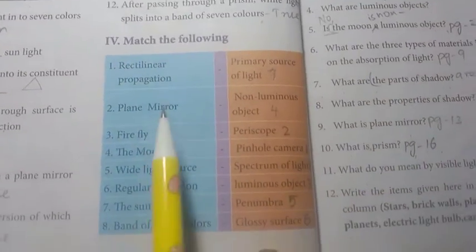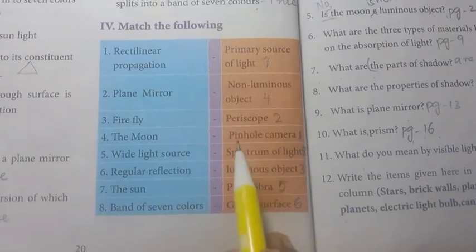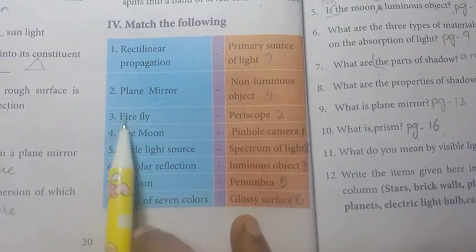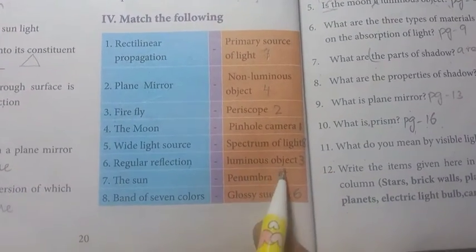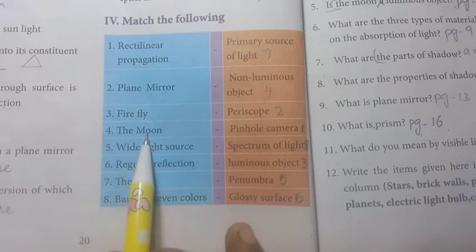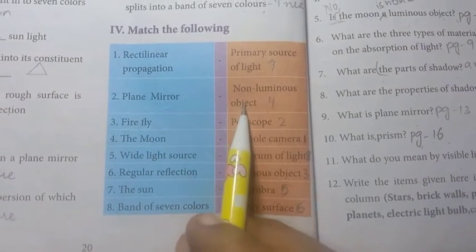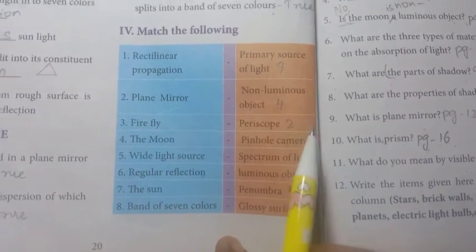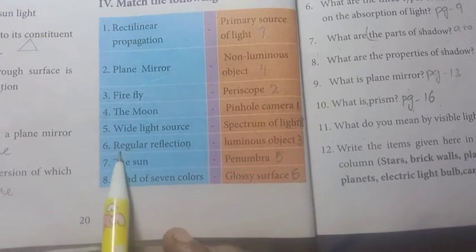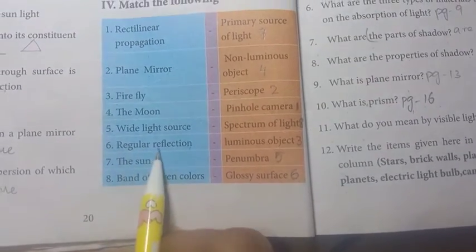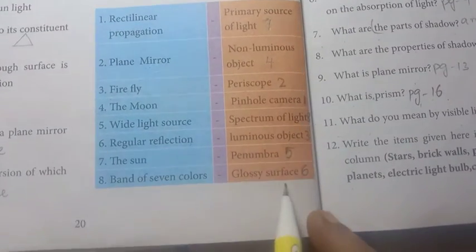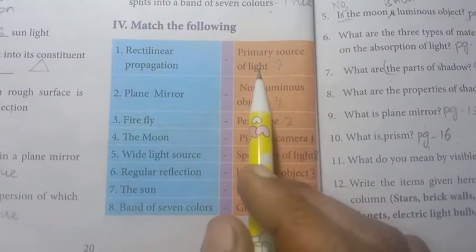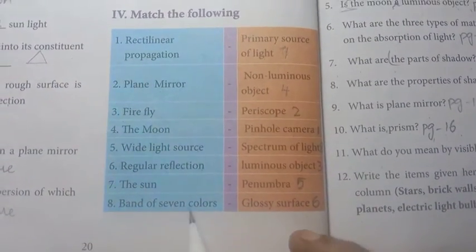Match the following: Rectilinear propagation — Pinhole camera. Plane mirror — Periscope. Firefly — Luminous object. Moon — Non-luminous object. Wide light source — Penumbra. Regular reflection — Glossy surface. The sun — Primary source of light. Band of 7 colours — Dispersion.